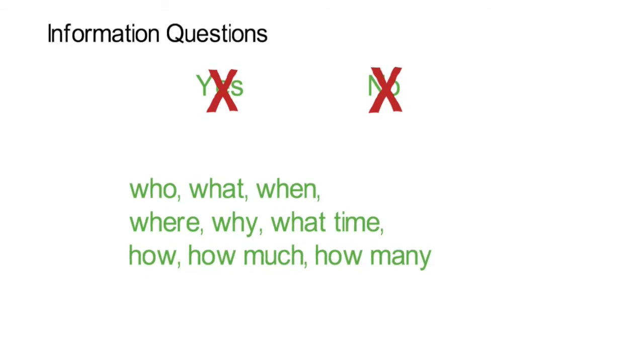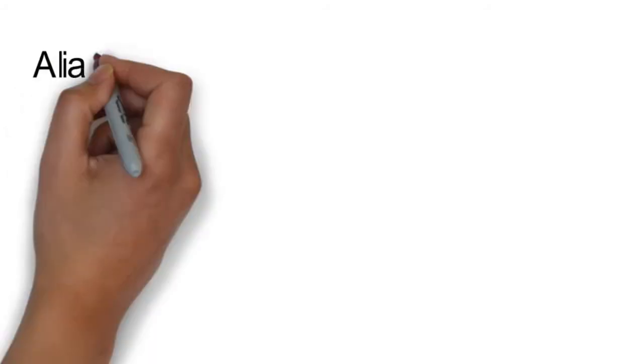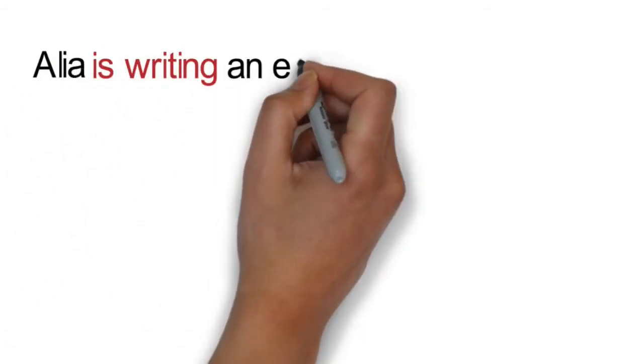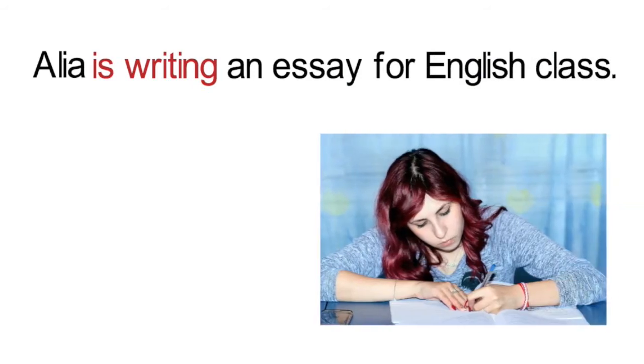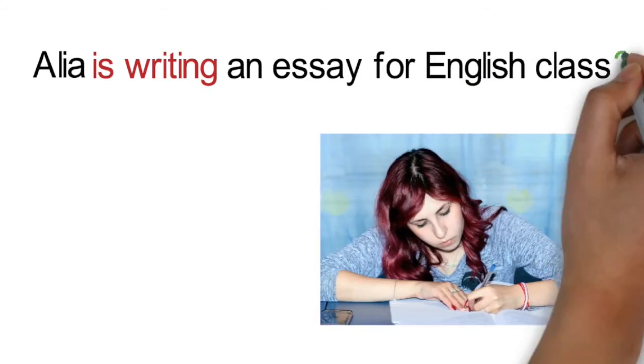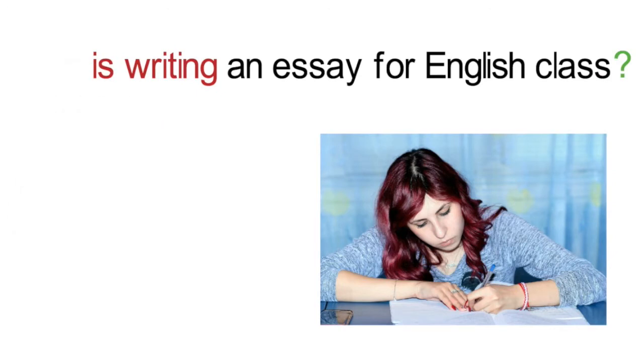Let's begin by looking at a sentence in the present continuous tense. Alia is writing an essay for English class. Now, let's turn this into an information question. We start by choosing the question word that makes sense for the situation, such as what or who. Let's choose who. Since we are talking about one person, we would next use the correct form of the verb to be for a singular noun. So our question looks like this: Who is?